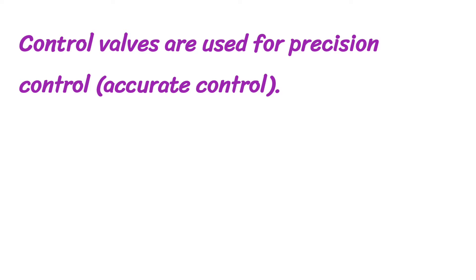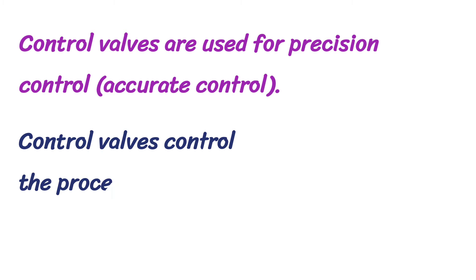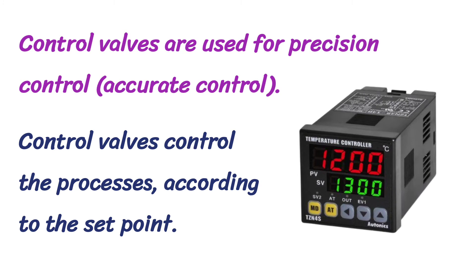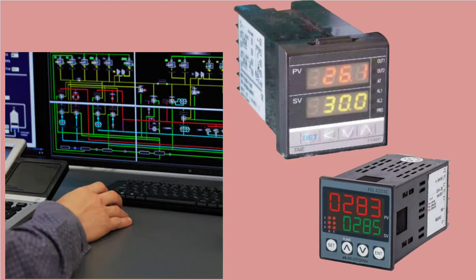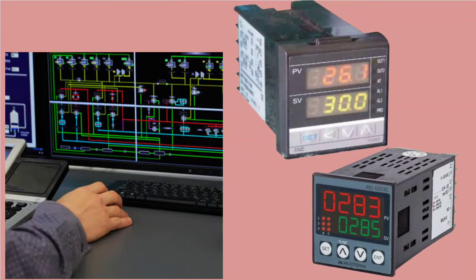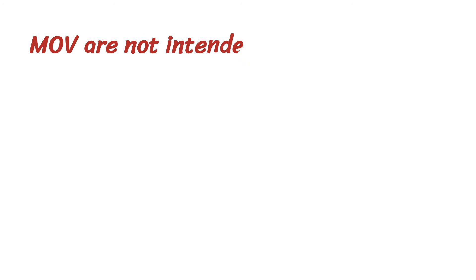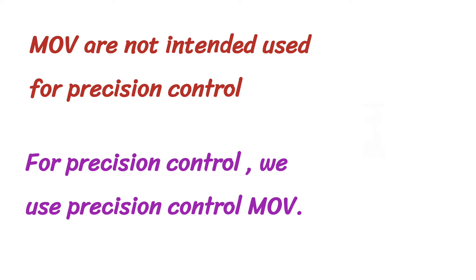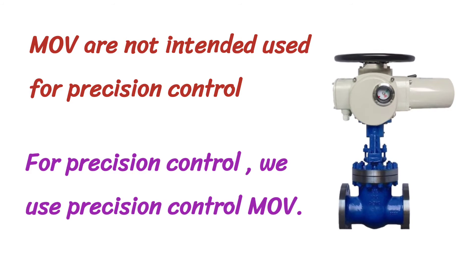Control valves are used for precision control — or accurate control. Control valves control the processes according to the set point. The set point for a control valve is set by a PID controller or PLC/DCS controller. Normally SP or SV is written for the set point. MOV is not intended for precision control — they are used for on/off control or inching control. If we use MOV for precision control, we use a precision control MOV.